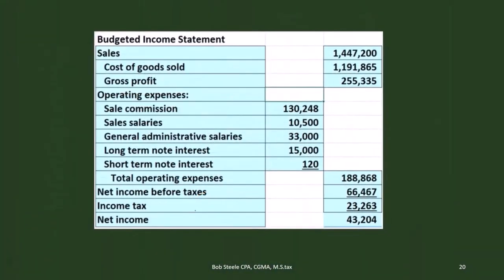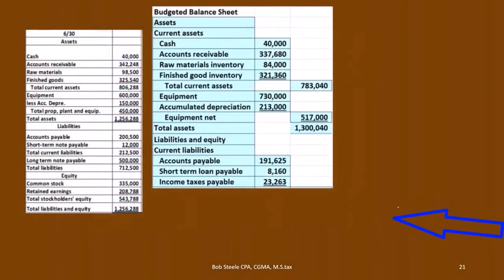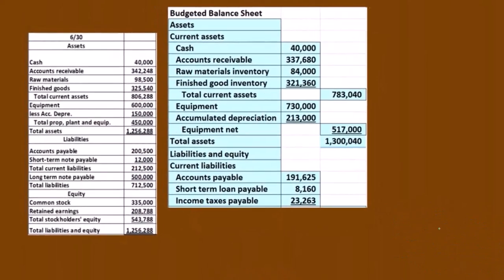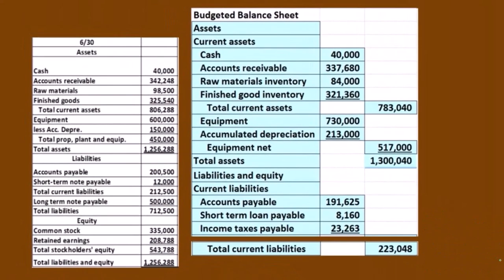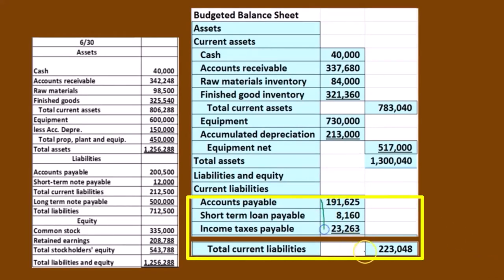Then we have the income tax payable. That's going to come from the income statement — we had to calculate the income tax payable, which is what's going to be owed for income taxes on the balance sheet at the end of this time period. Then we have the total current liabilities, which is of course this number plus this number plus this number, giving us the total current liabilities.